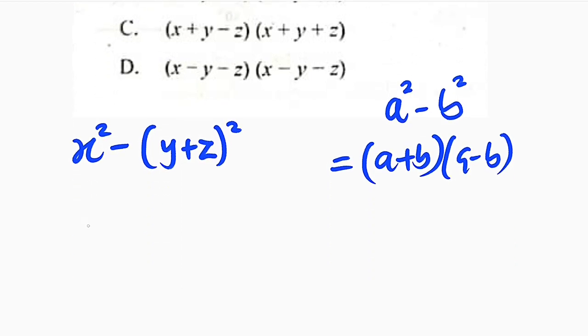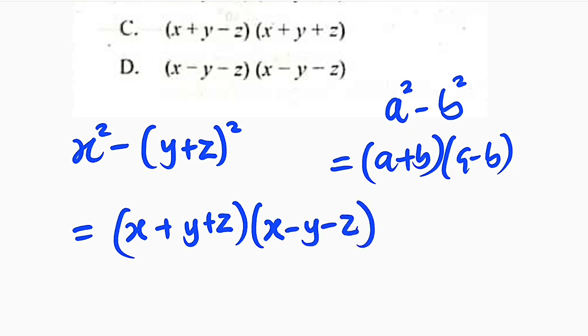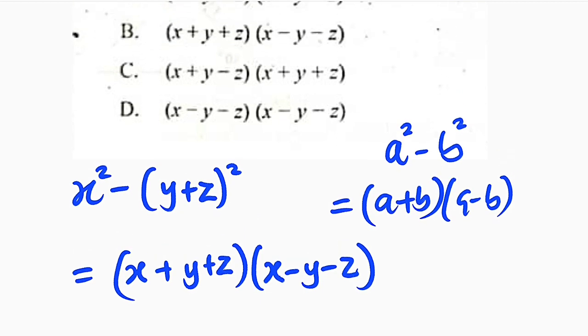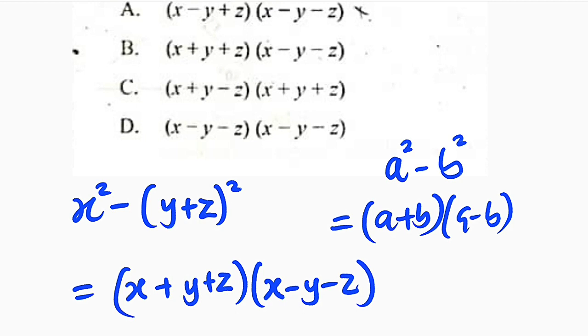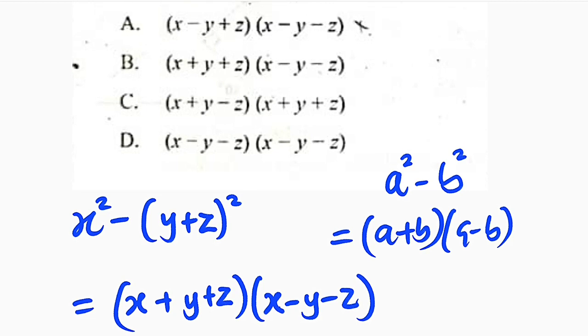to factorize it, let me bring it down here. We have x squared minus y plus z whole squared. By applying the same principle, we take x, we add it to y plus z. We multiply. We take x again. We subtract. And if you are subtracting, the negative sign will affect both terms. So we have minus y minus z. And there is nothing we can do to this expression again. So what is the right option? x plus y plus z times x minus y minus z, which is option B right here.